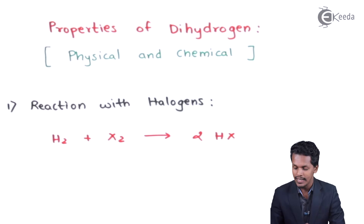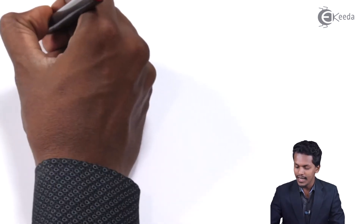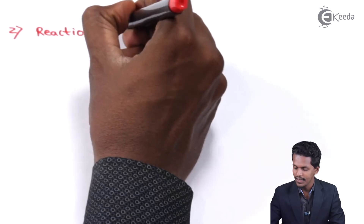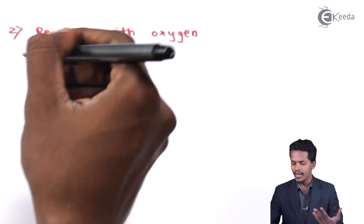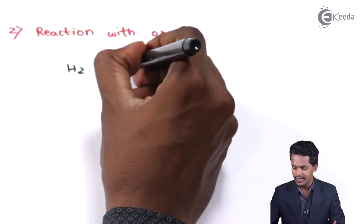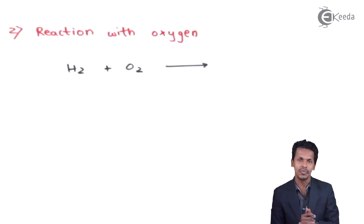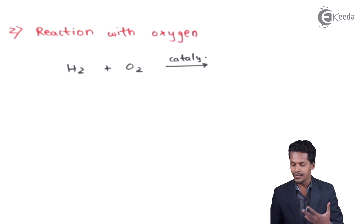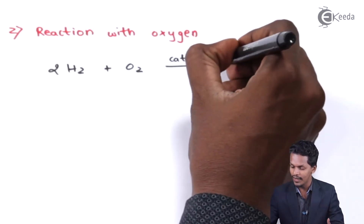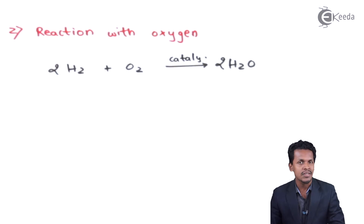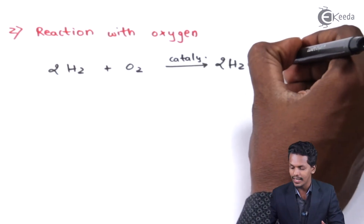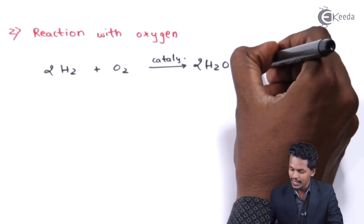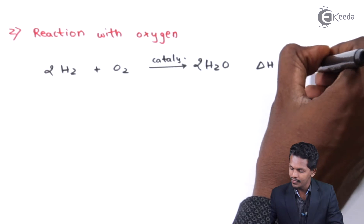Now let's talk about what happens when hydrogen is reacted with oxygen. Hydrogen doesn't react with oxygen very easily — we have to provide a certain catalyst or energy. Using a catalyst or heating, we obtain H₂O. The reaction needs to be balanced to get H₂O. This reaction is actually exothermic, and the amount of heat produced is found to be −285 kJ per mole.